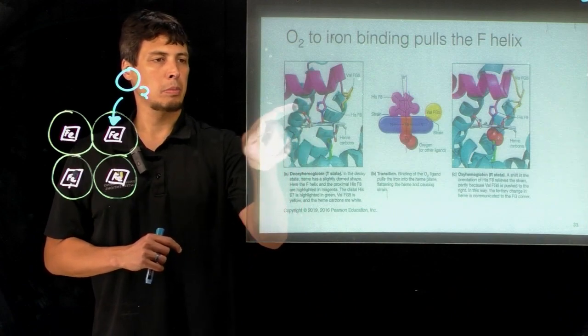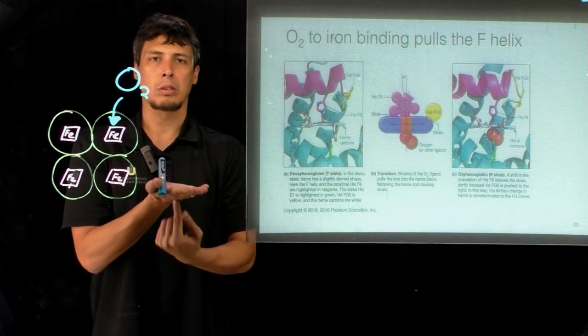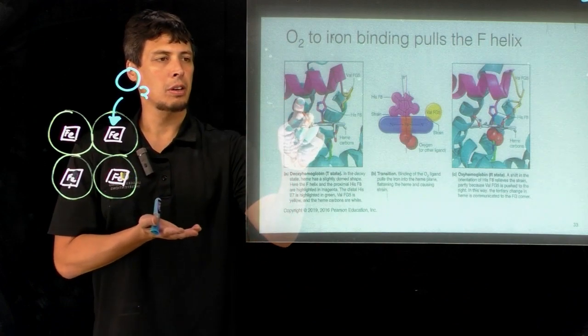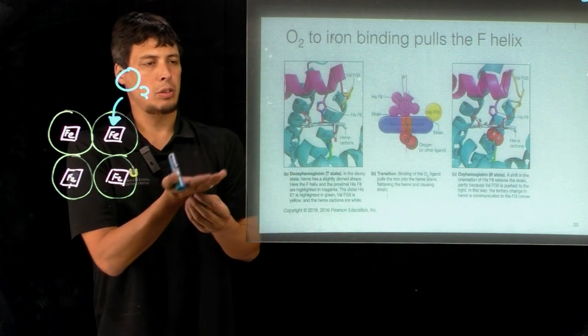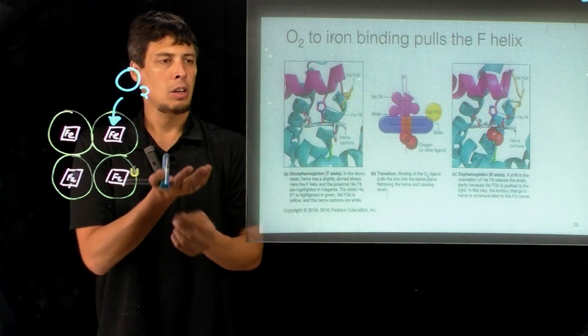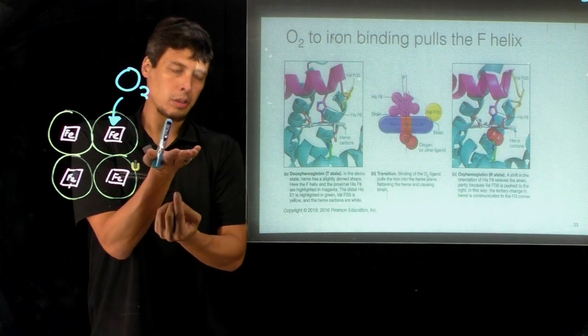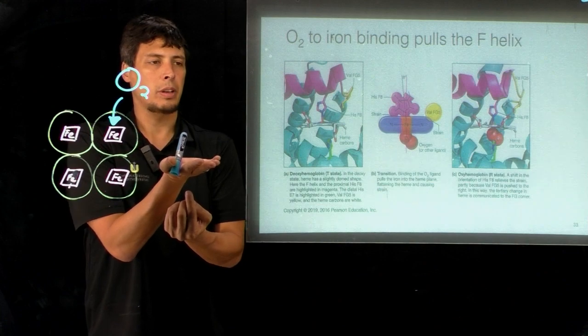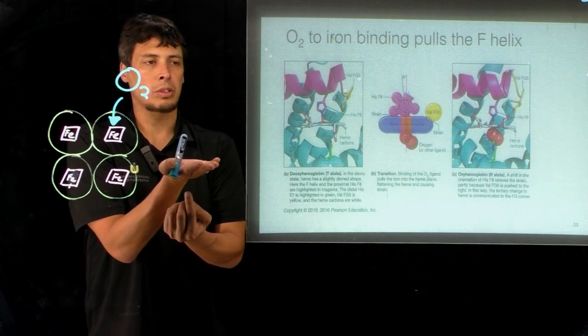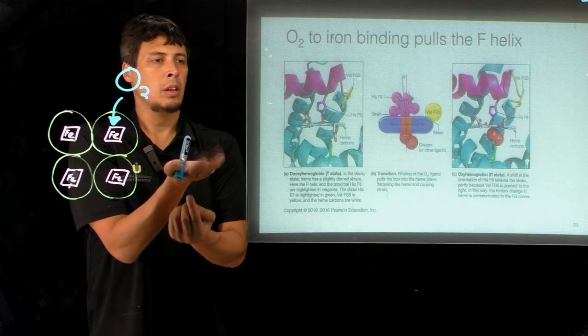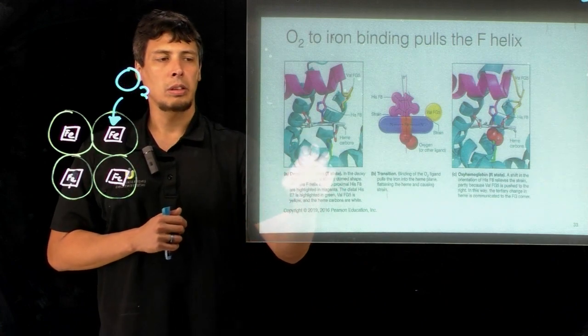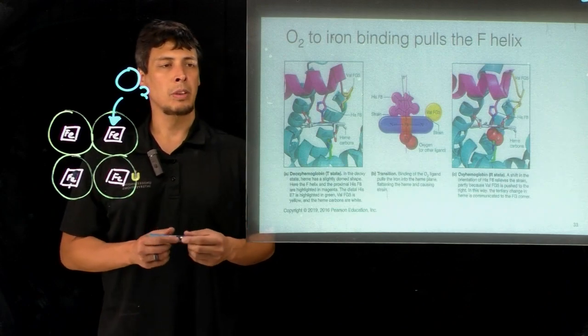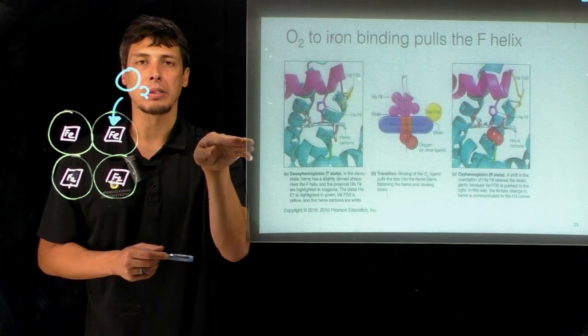The proximal histidine, which binds to the iron on the underside of the heme, is up here on top in this figure. If you look closely at the figure, you can see that the iron is slightly out of the plane of the heme. The heme is also a little puckered, which also contributes to this. On the bottom side is the distal histidine, which helps hydrogen bond the oxygen. So on the bottom side in this figure is where oxygen binds to iron.